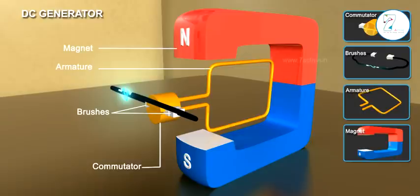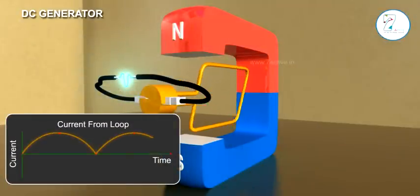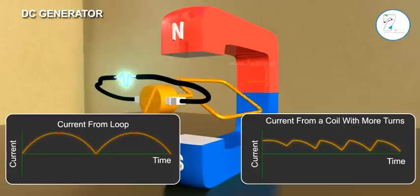The other major components of a DC generator are similar to that in an AC generator. A DC generator that contains a loop generates a pulsating DC current. To produce more stable current, a coil with more turns is typically used.